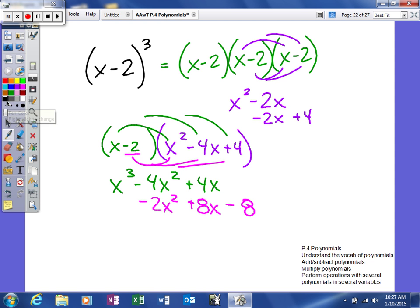Lastly, we'll combine like terms. X to the third minus 6X squared plus 12X, and then minus 8. When you're cubing or squaring a binomial, write the polynomial two times if you're squaring, three times if you're cubing.